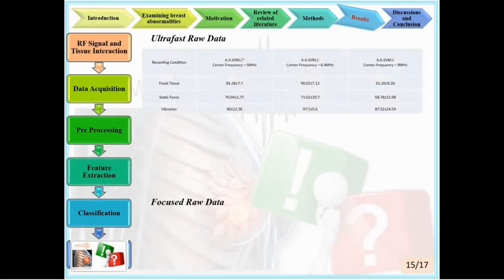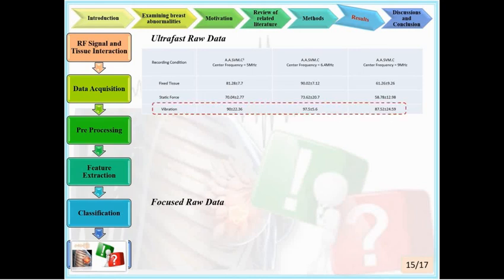The device produced two different data modes — ultra-fast and focused — used for classification. Results are summarized in three tables. The first table shows classification results for ultra-fast raw data: the accuracy of the classifier increases by using vibration in all types of SVM classification, compared to a fixed probe and static force. Therefore, vibration adds better information to the ultra-fast raw time series signal, confirming the main idea of the RFTSDP method.